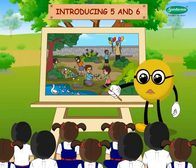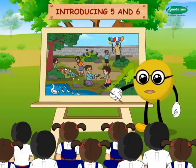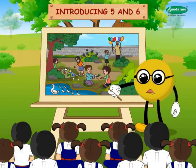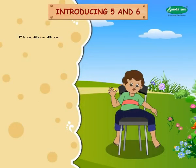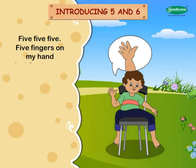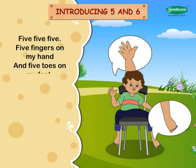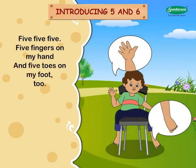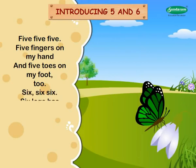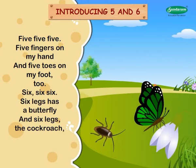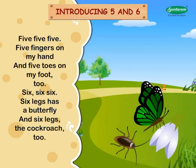Let us now sing a number jingle for five and six. Five five five — five fingers on my hand, and five toes on my foot too. Six six six — six legs has a butterfly, and six legs the cockroach too.